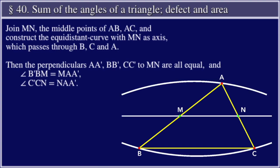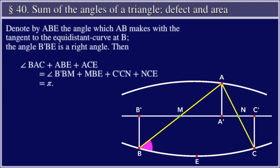Then the perpendiculars A'A, B'B, C'C to MN are all equal, and the angle B'BM is equal to MAA'. The angle C'CN is equal to NAA'.